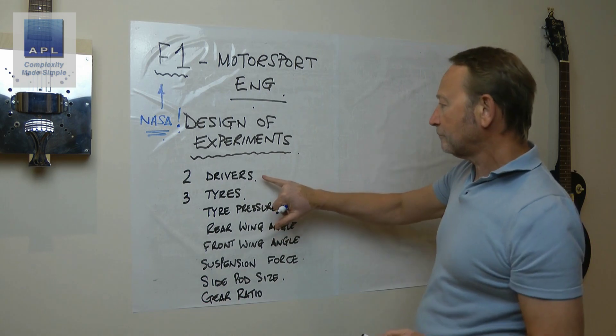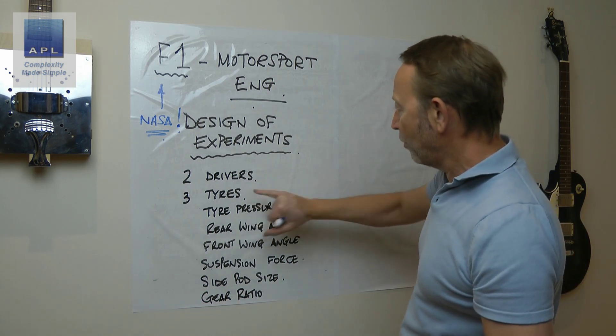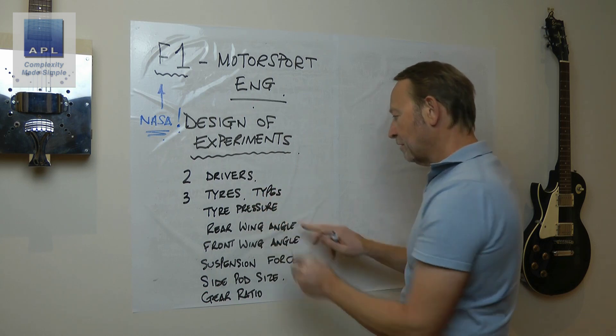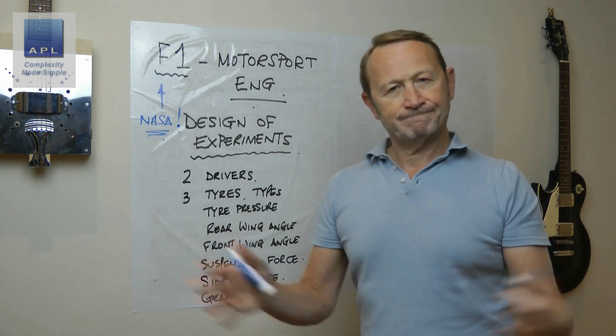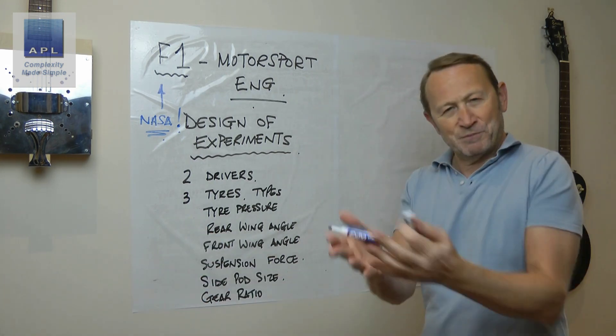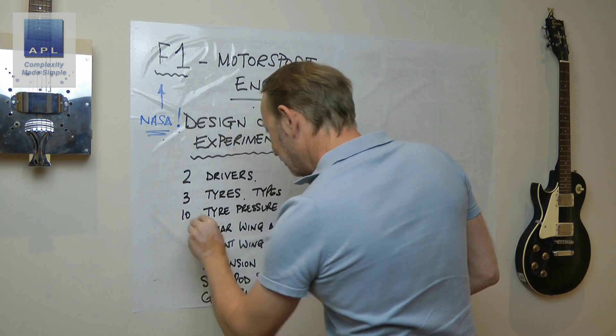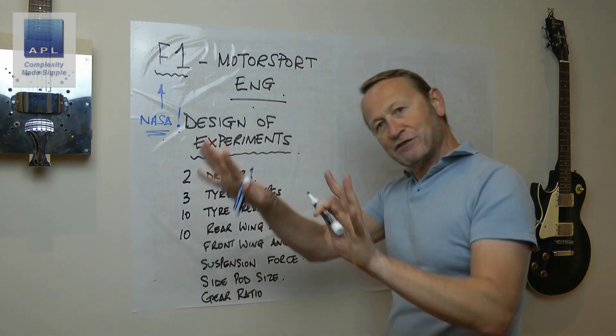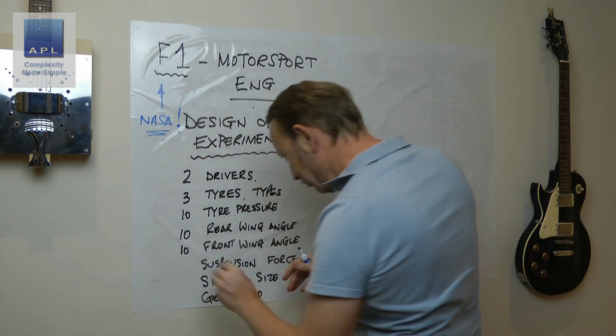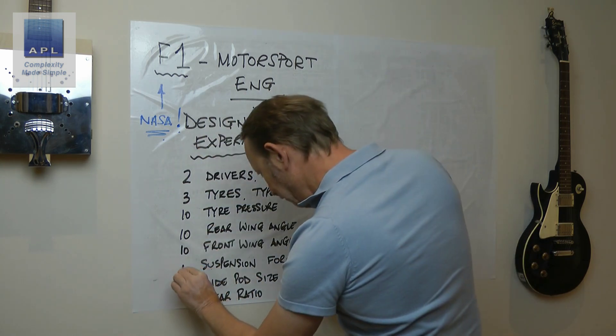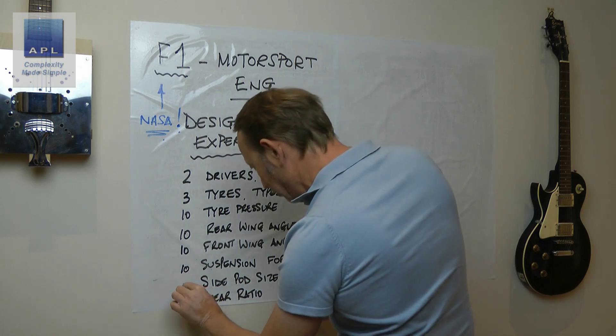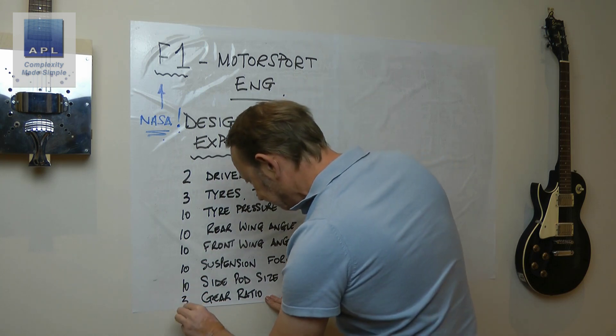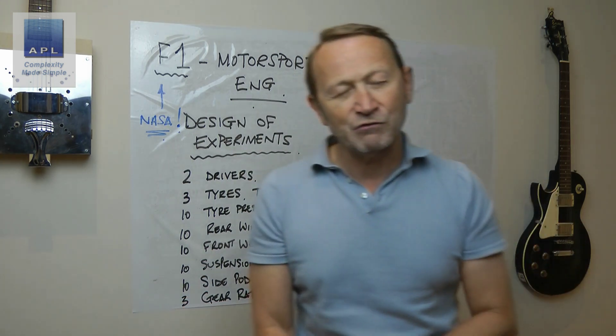Now look, these are fixed: two drivers, three tire types. Tire pressure though, we could have a scale here. There could be ten different tire pressures we might use. There might be ten different settings for the angle, front and rear. Suspension force, I might have ten settings. Side pod size, maybe I'll change it by ten millimeters. Gear ratio, maybe there's three different gear ratios you have.